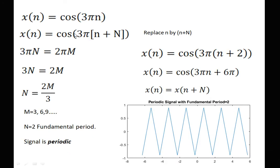Next: x(n) = cos(3πn). We replace n by n + N, then equate 3πN = 2πm, giving N = 2m/3.